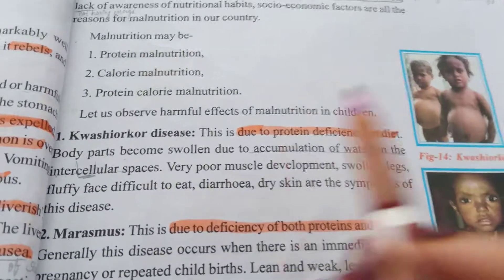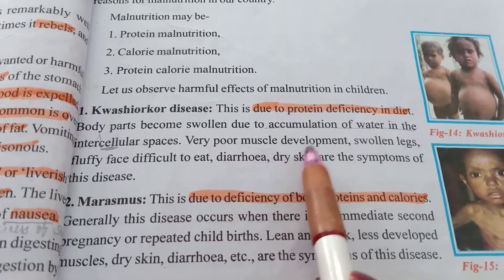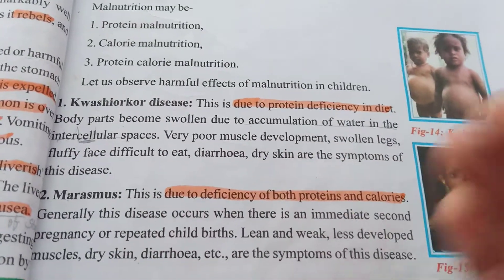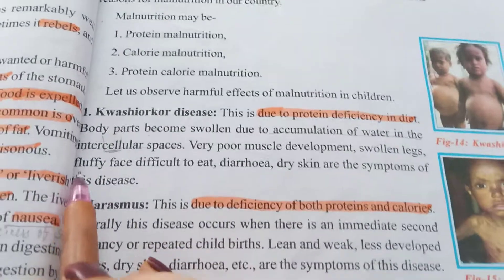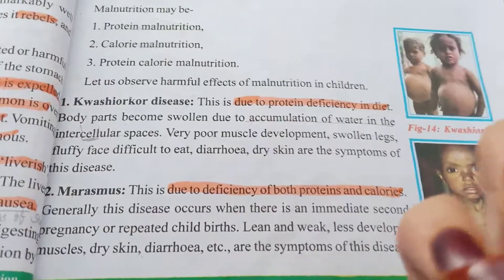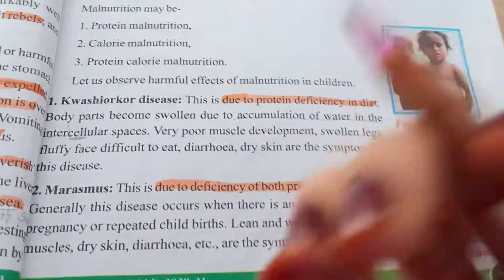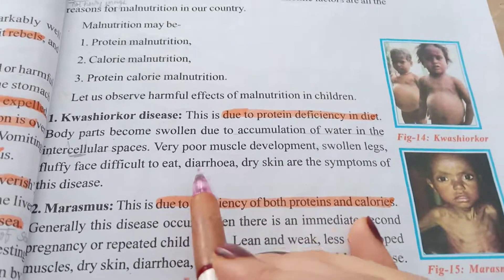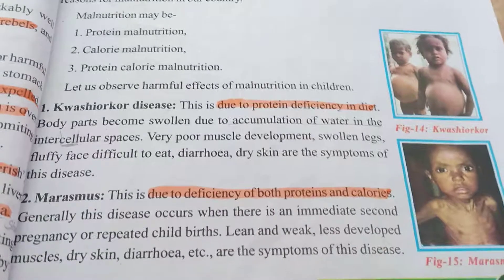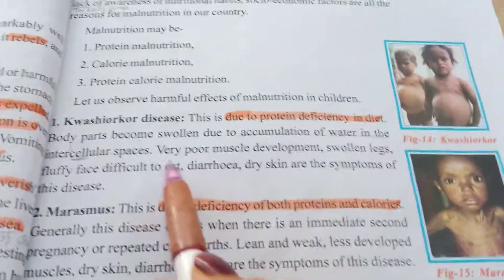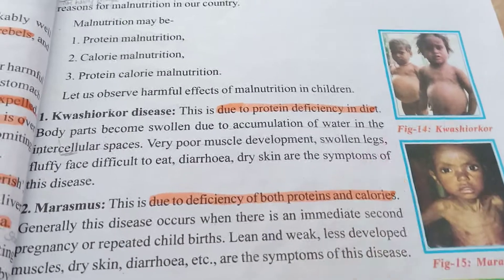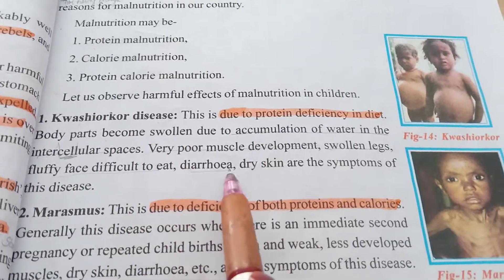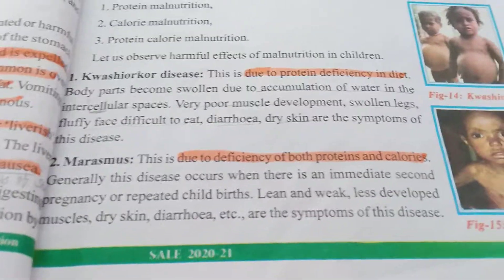Symptoms of Kwashiorkor include very poor muscle development, swollen legs, a fluffy appearance, difficulty in eating, diarrhea — which means loss of water through frequent loose motions — and dry skin. These are the main symptoms of Kwashiorkor disease.